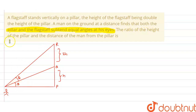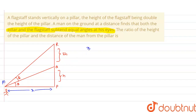Let this distance be equal to x, and M is the position of the man. We have to find h upon x — that is, the ratio of the height of the pillar to the distance. Let's call this ratio y, so y = h/x is what we need to find.